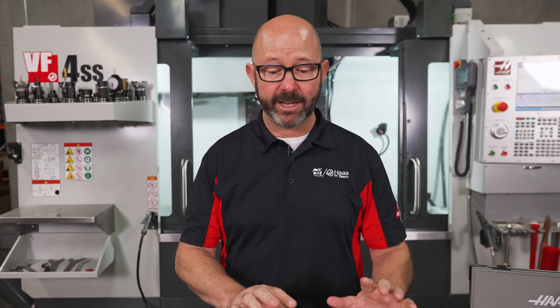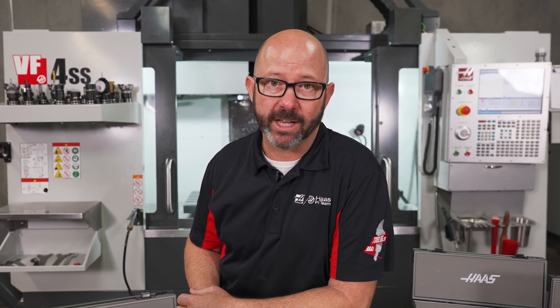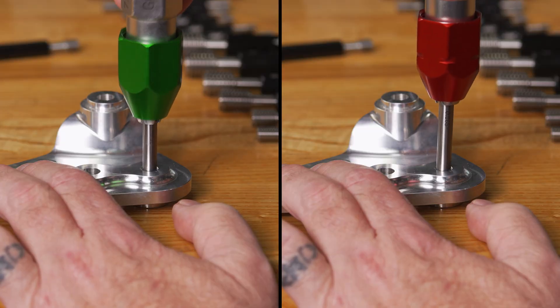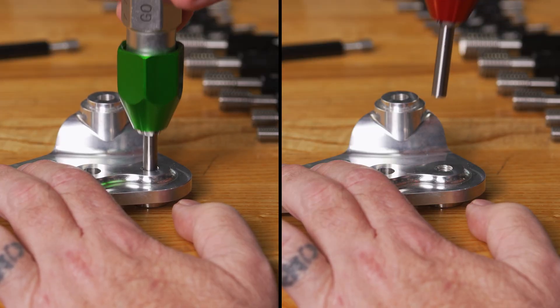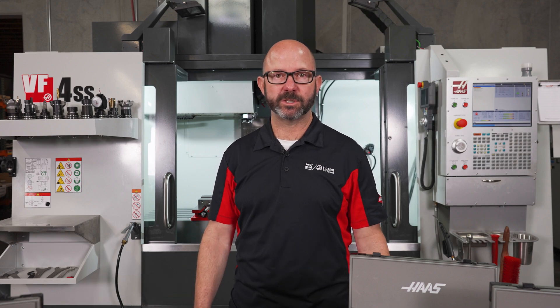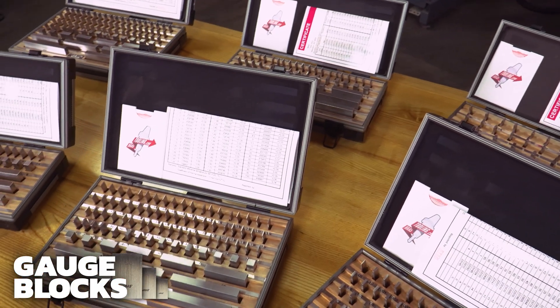For a more complete ID thread inspection, we're going to want to check our thread minor diameter as well that was created with our tap drill, and we can check that using regular gauge pins. Of the hundreds of different inspection tools available to us, gauge blocks are special.